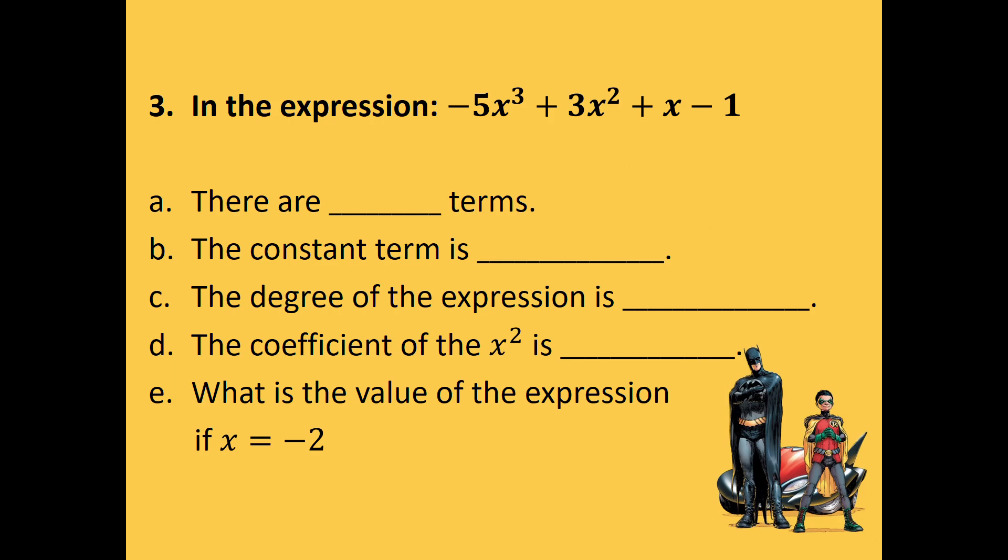So there are how many terms in the above expression? Let's have a look. So remember terms separated by a plus or a minus. So I've got 1, 2, 3, 4 terms. The constant term, so you're looking for the one that doesn't have the x. That would be here, so minus 1. The degree of the expression, you're looking at your highest exponent, which would be 3. And the coefficient of x squared, so where is x squared? It's over here. So the coefficient would be the number in front, so positive 3.